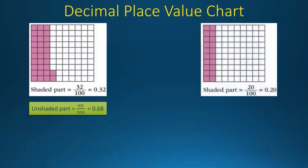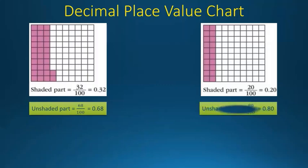Now let's take the second example. We can see that there are only 2 lines which are shaded. So the shaded part will be equal to 20/100 or 0.20. We can calculate the unshaded part: 100 minus 20 equals 80. We can also count the unshaded lines: 1, 2, 3, 4, 5, 6, 7, 8. So the unshaded part is equal to 80/100 or 0.80.